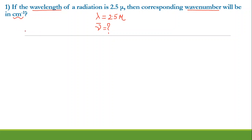Just to remind you, whenever there is a wave it flows like this, and whenever it flows like this these are the crests and these are the troughs. The distance between two crests or two troughs is known as wavelength. So we know the distance here is 2.5 mu. What they are asking is wave number, which is the number of waves passing through a particular space — like one centimeter — so how many waves are passing.